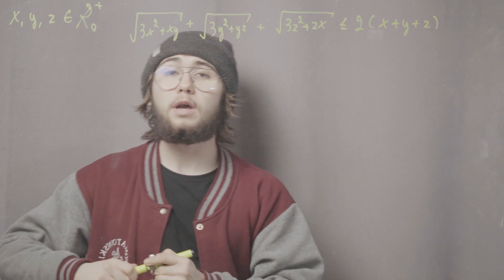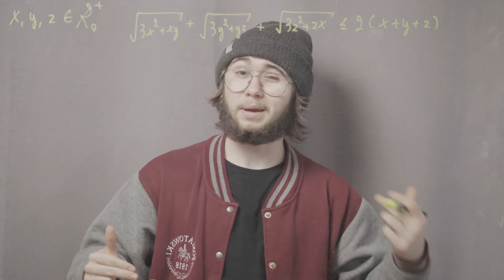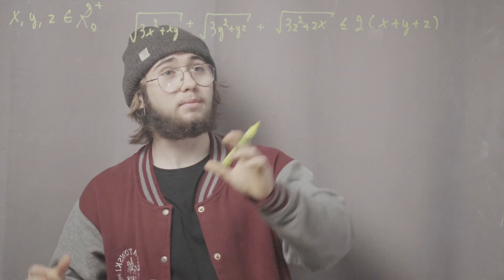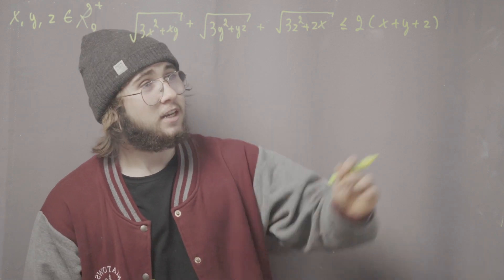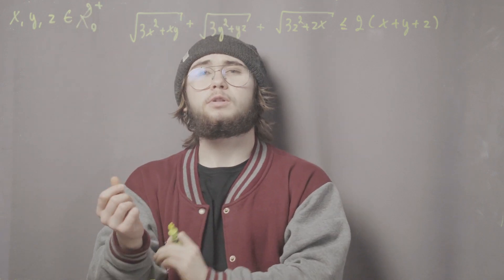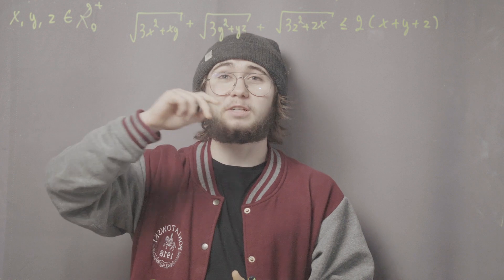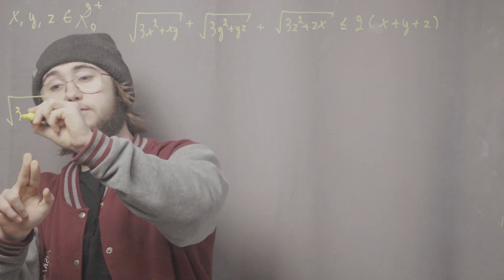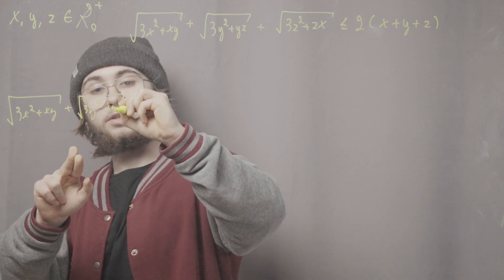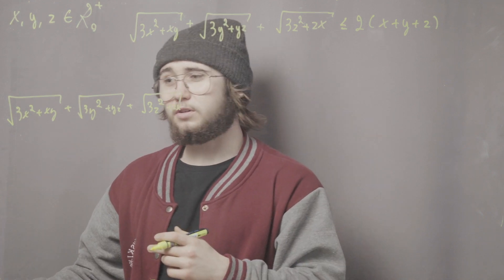One more problem. We are given non-negative reals x, y, and z, and we're supposed to prove that √(3x²+xy) + √(3y²+yz) + √(3z²+zx) ≤ 2(x+y+z). We can rewrite each term as a product: √x·√(3x+y), √y·√(3y+z), and √z·√(3z+x), and try to use Cauchy-Schwarz.